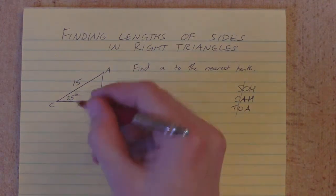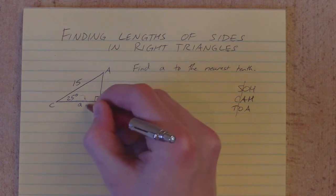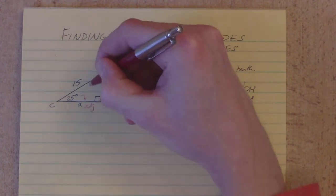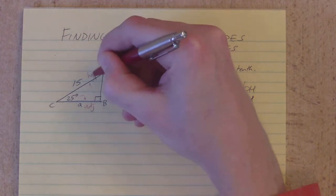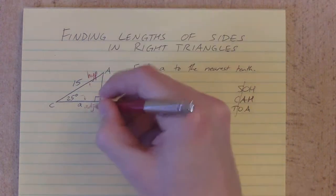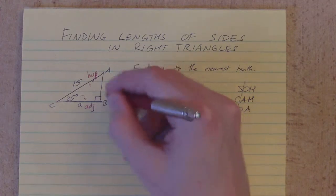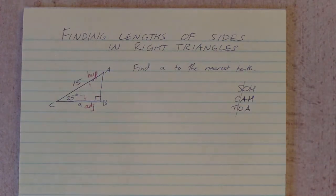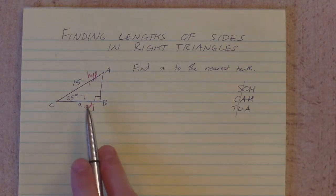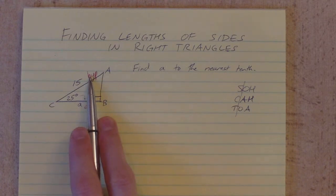Relative to that angle, I know the adjacent side here, and I know the hypotenuse up here. I don't care about the length of side AB. That one really doesn't matter to me. I'm just going to work with the two that I'm given. I've got the adjacent and I've got the hypotenuse.